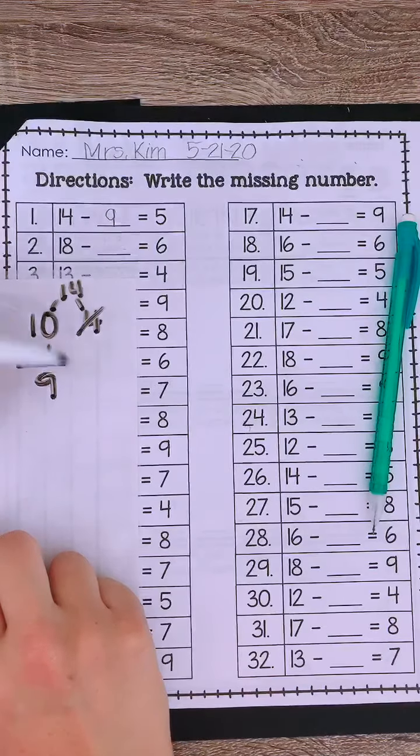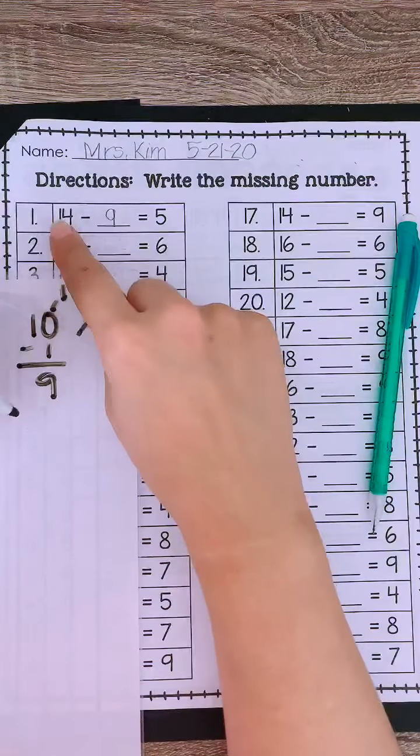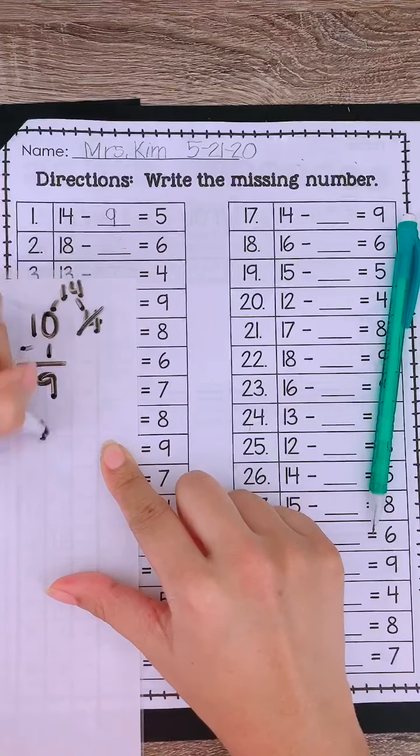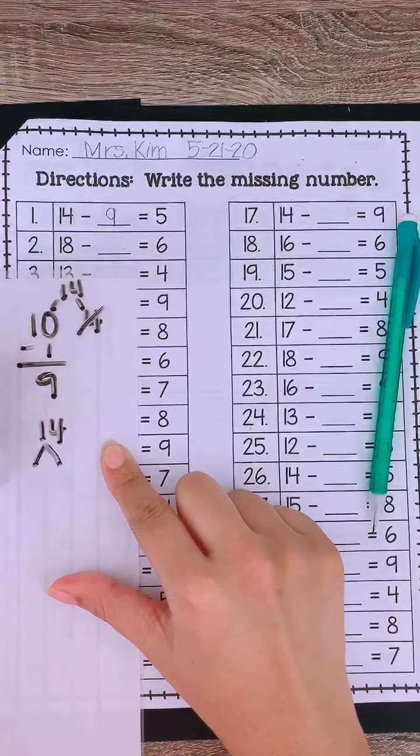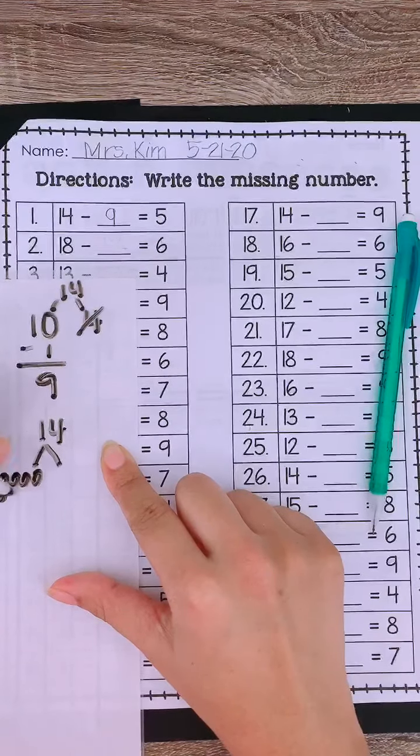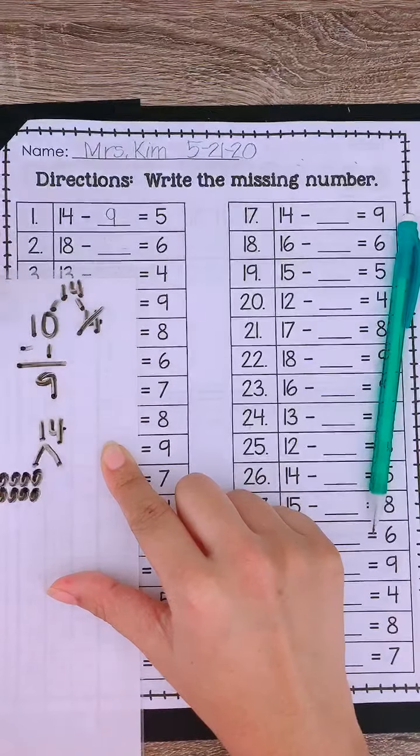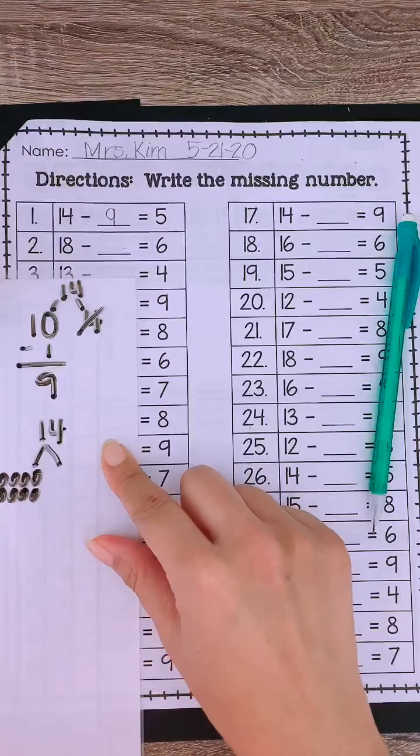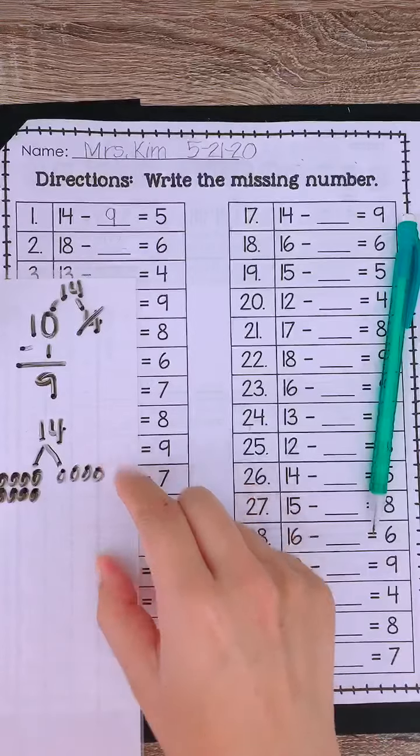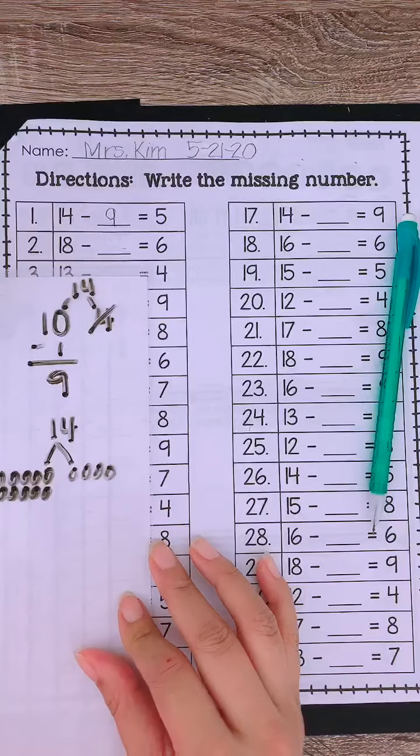Another way you can do it is if you took the 10 and 14 and you drew the circles. So you write the 14, 10 circles. 1, 2, 3, 4, 5. 1, 2, 3, 4, 5. Because I know 2 5s make a 10. And then 1, 2, 3, 4. We did this with our acorns, and we did this with our circles last week.